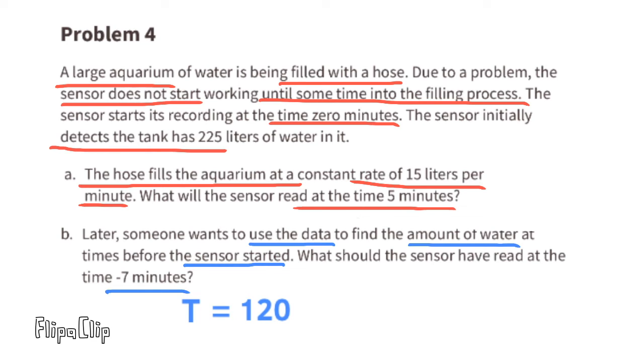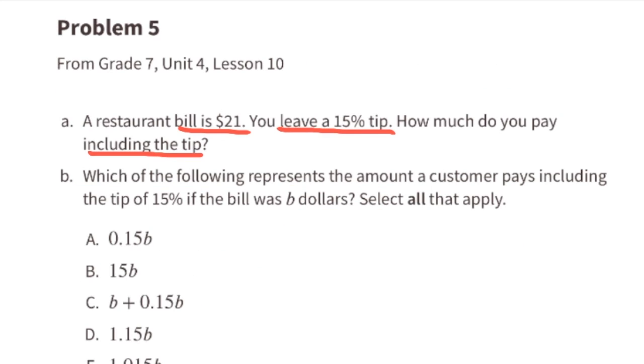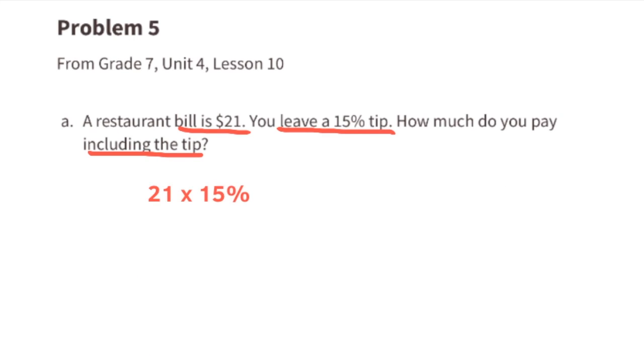Problem number five, from seventh grade Unit 4, Lesson 10. Part a: A restaurant bill is $21. You leave a 15% tip. How much do you pay including the tip? It's 21 times a 15% tip. We can rewrite this as 21 times 0.15, which equals three dollars and 15 cents. So you'd leave a three dollar and 15 cent tip. Add that to the price of the bill, the total amount paid including the tip would be 24 dollars and 15 cents.